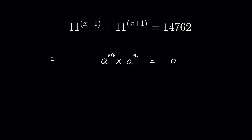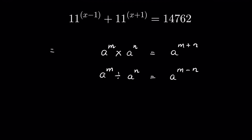We have two identities: a raised to the power m times a raised to the power n equals a raised to the power m plus n, and a raised to the power m divided by a raised to the power n equals a raised to the power m minus n. Let's use these two identities.